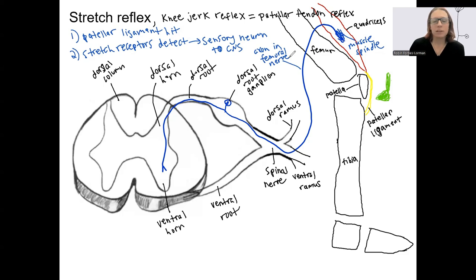So femoral nerve is going to carry the information to the spinal cord, to the CNS. So specifically the lumbar region, L2 through L4, that's where the femoral nerve arises from, right? That's the spinal segments and where this nerve arises.